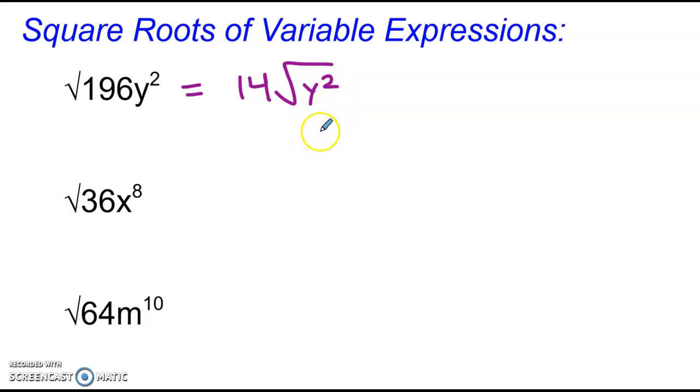Remember, y squared is the same thing as saying y times itself, y times y. So the square root of y squared is, I just take that out of the radical, and that becomes 14y. And we'll see a bunch more of these with exponents higher than 2, but this at least gives you the idea.